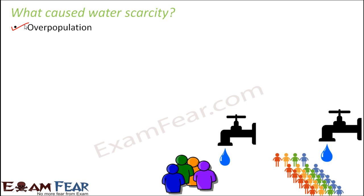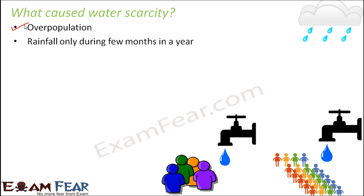There is no control on the population. When the number of people increases so fast, their demands also increase. For example, the water need of four people living in a house is not the same as for twelve people. As the number of people increases, the demand for water also increases - for drinking, food, washing clothes, and a variety of other purposes.